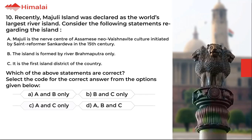Question number 10. Recently, Majuli Island was declared as the world's largest river island. Consider the following statements regarding the island. A. Majuli is the nerve center of Assamese Vaishnava culture initiated by saint-reformer Srimanta Sankardeva in the 15th century. B. The island is formed by river Brahmaputra only. C. It is the first island district of the country. Which of the above statements are correct? Select the code for the correct answer from the options given below. The correct option is D.